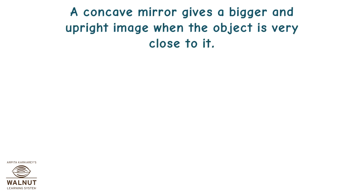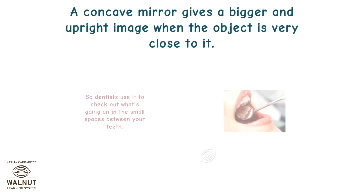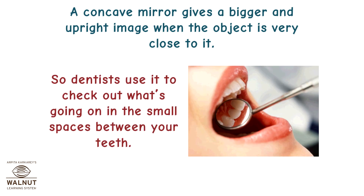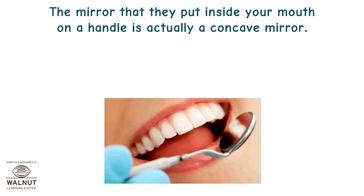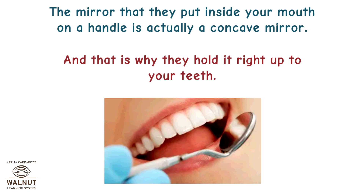A concave mirror gives a bigger and upright image when the object is very close to it. So dentists use it to check out what's going on in the small spaces between your teeth. The mirror that they put inside your mouth on a handle is actually a concave mirror, and that is why they hold it right up to your teeth.